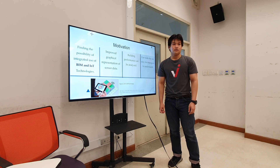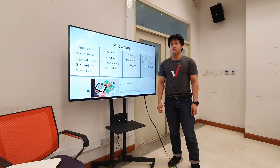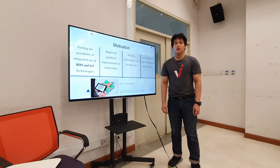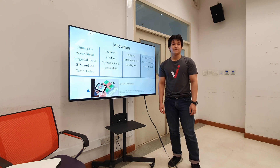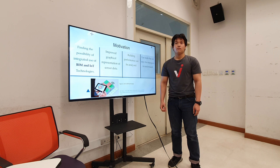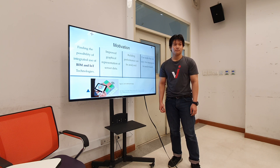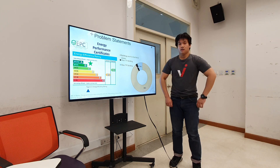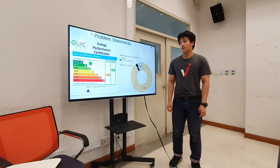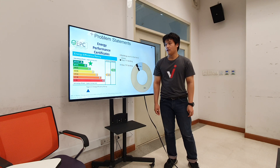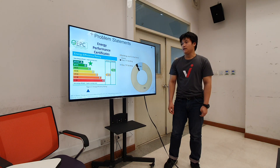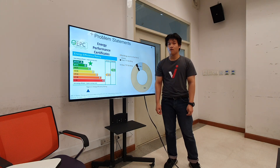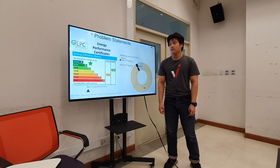The motivation for this research is to combine Building Information Modeling and Internet of Things technology to create a digital twin program that can display sensor data and spatial data in real time. The goal is that the data can be analyzed in order to improve energy use more efficiently. The issue that leads to this research is that the Energy Performance Certificate shows energy efficiency in buildings is far from what is required by the planned year 2050.